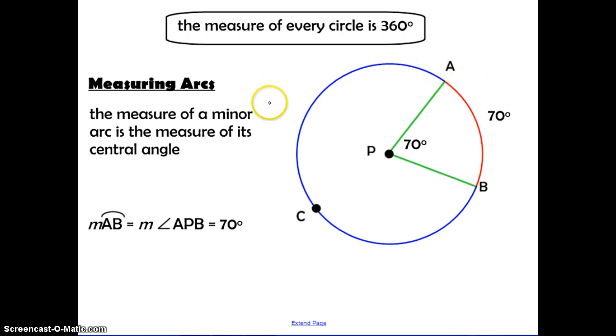Now when we're trying to measure arcs, the measure of a minor arc is the measure of its central angle. So here, if we have angle APB, and if the central angle measures 70 degrees, the arc it cuts off from A to B is also 70 degrees.